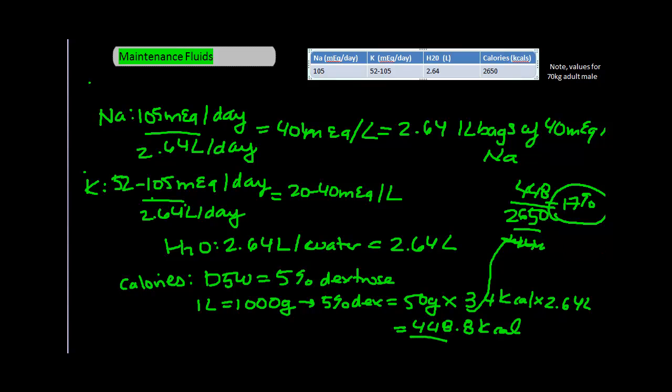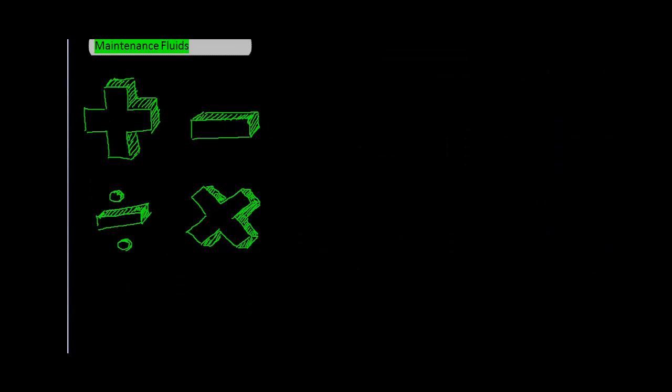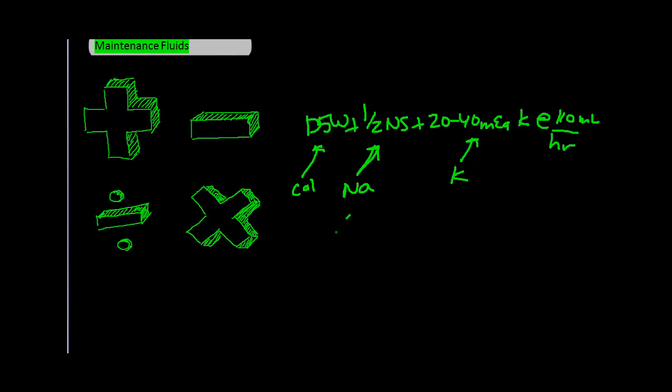So, let's put all of this together. You're going to use D5 as a source of calories to prevent the body from having to break down muscles to obtain calories. You're going to use half normal saline as the sodium source because it's not too hypotonic like quarter normal saline, and it doesn't provide more sodium than you need like normal saline. And you're going to add 20 to 40 mmol of KCl to provide the K need. What we come up with is D5 half normal saline with 20 to 40 mmol of KCl given at the rate of 110 mL per hour, which turns out to be 2.64 liters per day of total fluid as the best theoretical maintenance fluid.